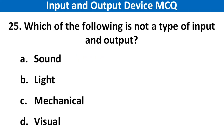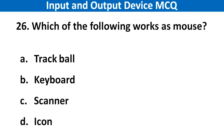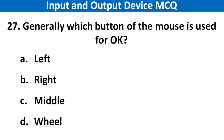Next question: Which of the following is not a type of input and output? Right answer is option B: Light. Next question: Which of the following works as a mouse? Right answer is option A: Trackball. Next question: Generally, which button of the mouse is used for OK? Right answer is option A: Left.